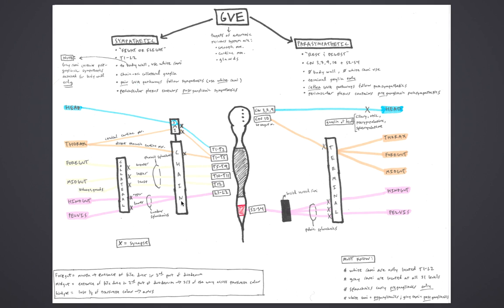GVA impulses from viscera can be divided into reflex pathways or pain pathways, and the type of impulse dictates the path the afferent fiber takes to reach the CNS. Reflex pathways utilize parasympathetics to reach the CNS. For example, a GVA neuron in the thorax sensing changes in blood pressure will travel retrograde to the sensory ganglion associated with the vagus nerve. Likewise, a reflex GVA sensation from the bladder will travel retrograde on the pelvic splanchnics to reach the dorsal root ganglia of S2 to S4.